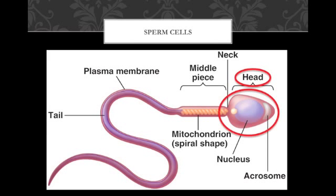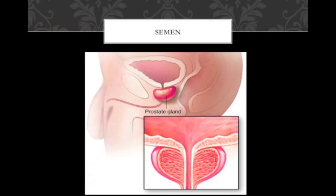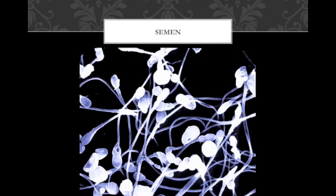Sperm cells consist of three regions: the head, which contains chromosomes and enzymes essential for fertilization; the neck, which contains centrioles of the spermatid and mitochondria which provide energy; and the tail, which moves in a corkscrew-like motion, consisting of the middle piece and the tail. The fluid component of semen is a mixture of secretions from the prostate, seminal, and bulbourethral glands. Together these glands activate spermatozoa, provide nutrients for mobility, generate peristaltic contractions that propel spermatozoa throughout the male reproductive tract, and produce buffers that allow sperm cells to survive in the acidic urethral and vaginal environments. Semen is made up of three components: spermatozoa, seminal fluid, and enzymes.